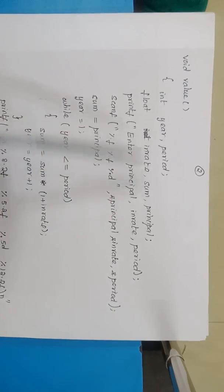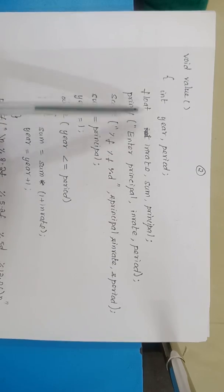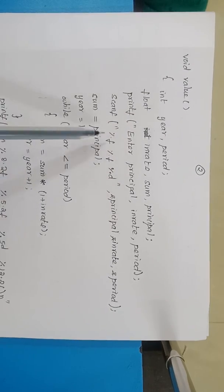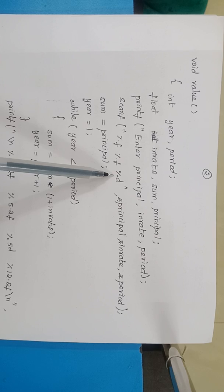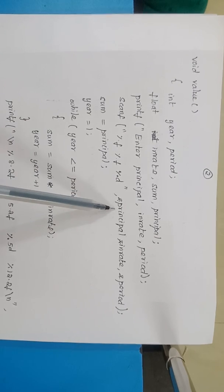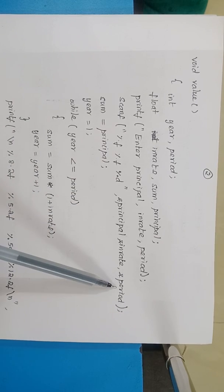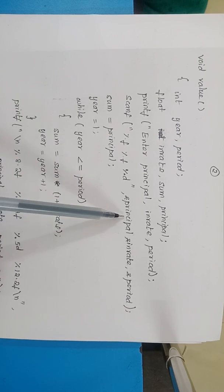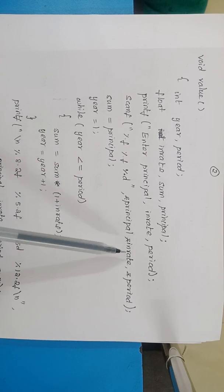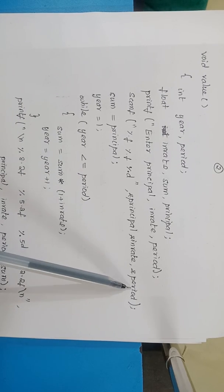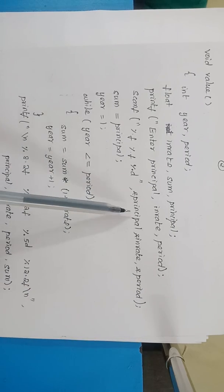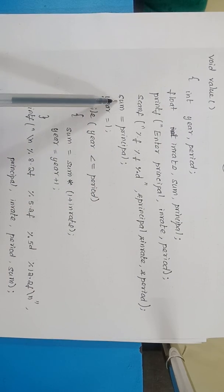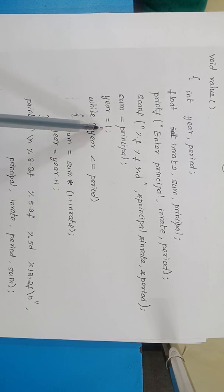Principle is a float value, in_rate is also a float value, and period is an integer. So we use %f, %f, %d with ampersand principle, ampersand in_rate, ampersand period. After receiving all the values — this is principle, this is rate of interest, this is period — I am assigning the principle value to sum and I am taking year to be 1.